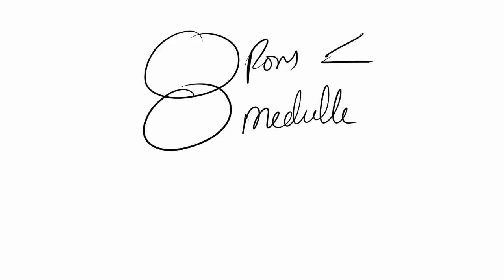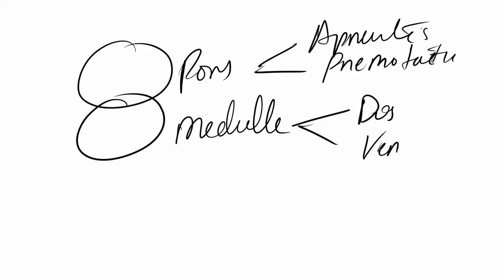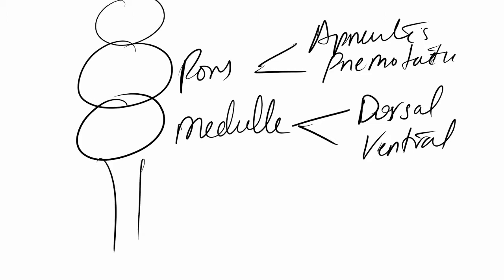The respiratory centers are located in the pons and medulla. In the pons we have the apneustic center and the pneumotaxic center. In the medulla we have the dorsal group of neurons and the ventral group of neurons. We also have the spinal cord and midbrain involved. Out of all these, the main one is the dorsal group.